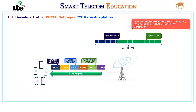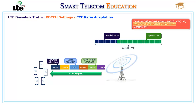The CCE ratio adjust switch parameter specifies whether to enable CCE ratio adaptation. If set to ON, the eNodeB dynamically adjusts the CCE ratio each TTI based on uplink and downlink CCE usage. If set to OFF, the eNodeB does not dynamically adjust the CCE ratio. If set to enhanced CCE ratio adjustment, the eNodeB dynamically adjusts the ratio each TTI, and if uplink CCE allocation fails due to CCE unavailability in the search space, the uplink-downlink CCE ratio will not be adjusted.